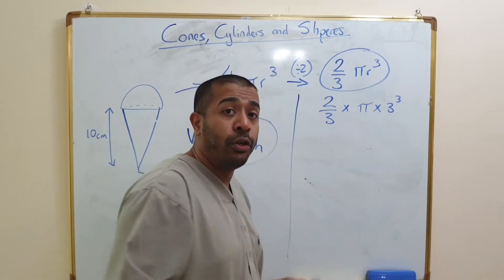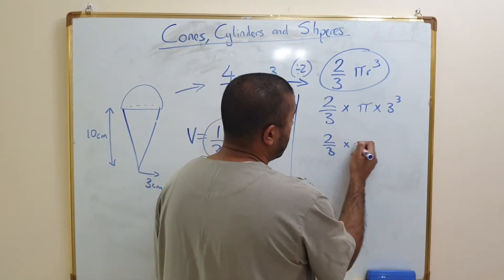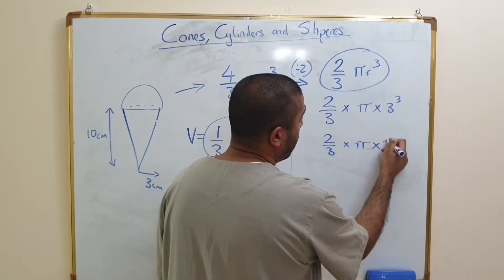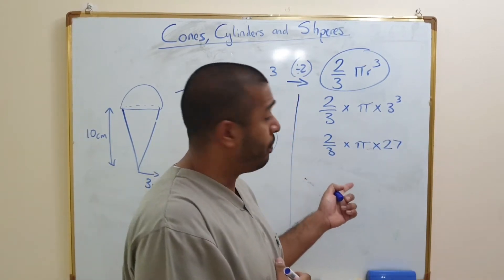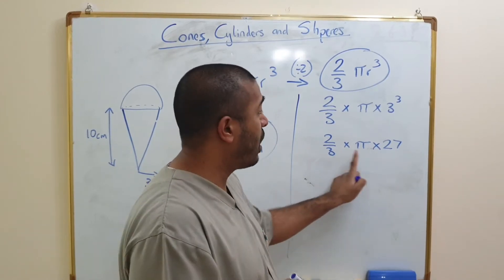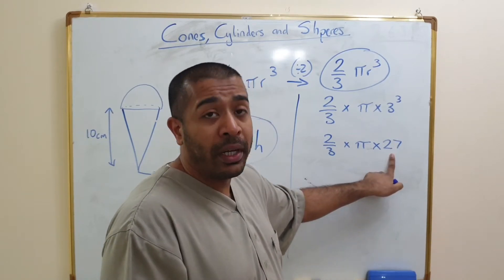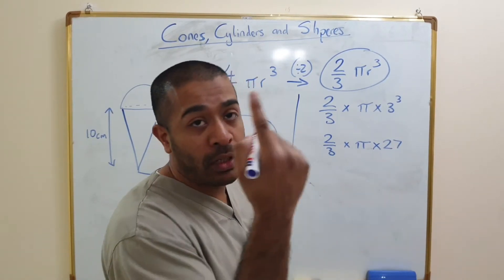So it's 2/3 times by pi times by 3 cubed. 3 cubed is 27, so it's going to be 2/3 times by pi times by 27. Well if I've got 27, I can multiply these two together. Now the problem is that's a fraction and that's a whole number, but that's easy to fix.